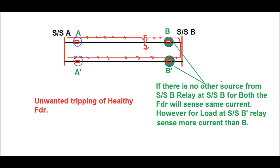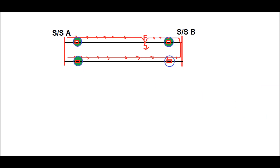This unwanted tripping can only be avoided by giving directional features to the relay. After applying the directional features, under the same fault condition, relay A, relay B, and relay A' will sense the fault current. By giving proper time coordination of the directional relay, we can differentiate the fault and the faulty section will be cleared first by relay A and relay B. If relay B does not clear the faulty section, then relay A' will trip the healthy feeder to clear the faulty section. Therefore, relay A' will act as a backup for relay B.